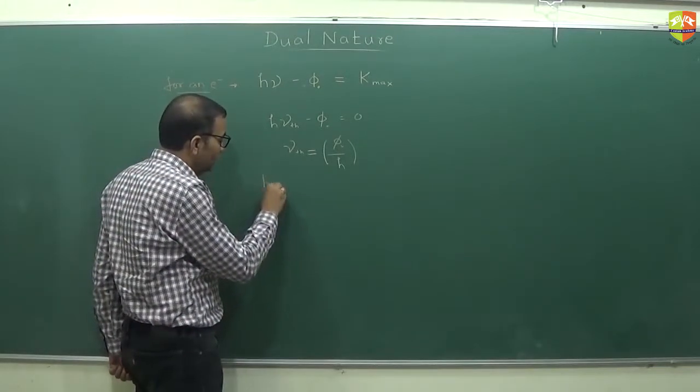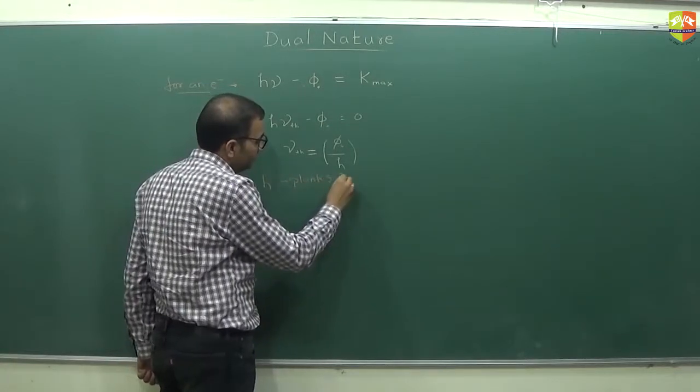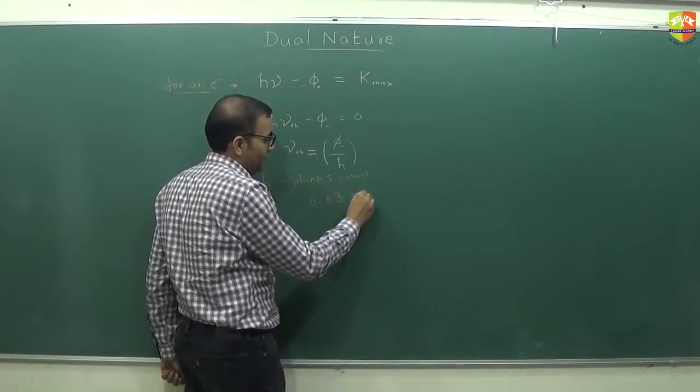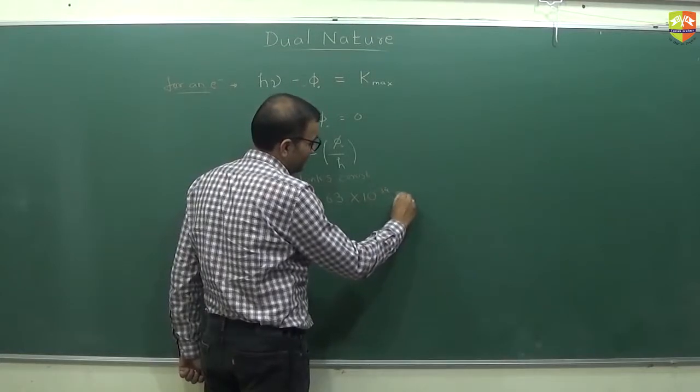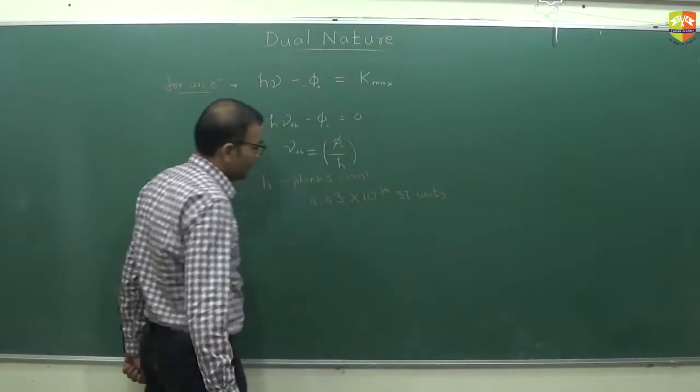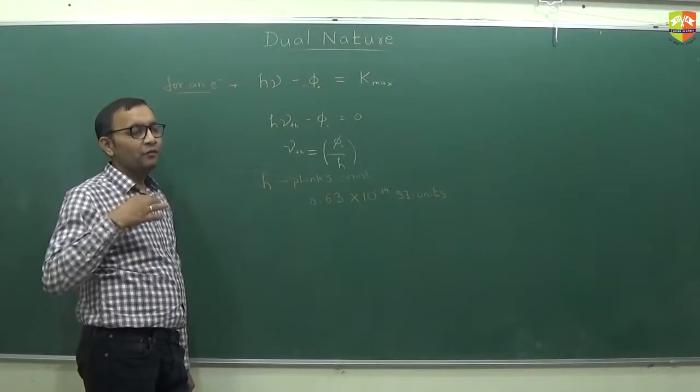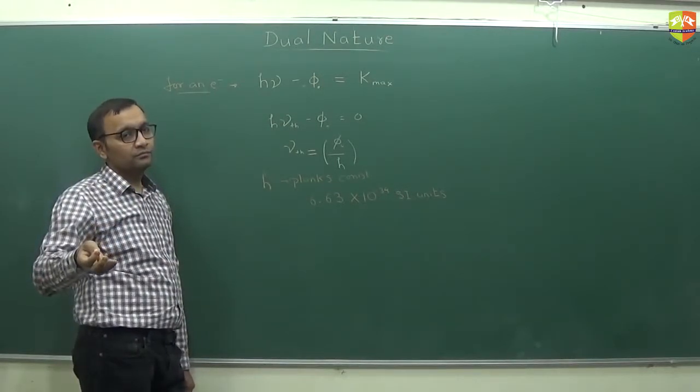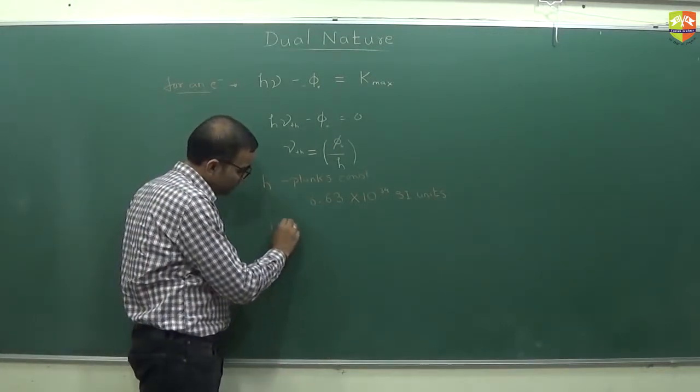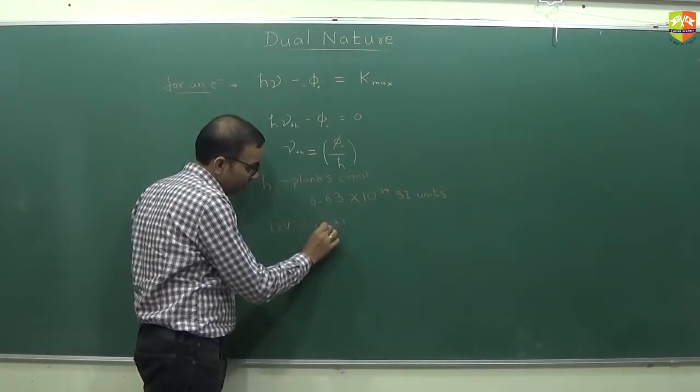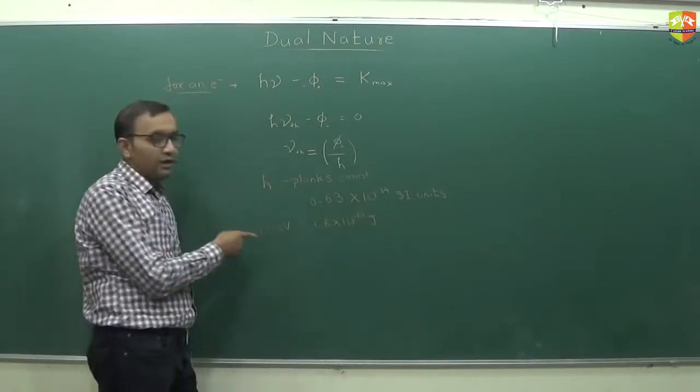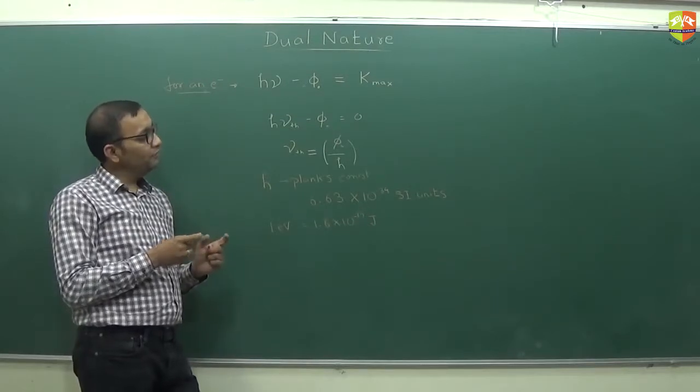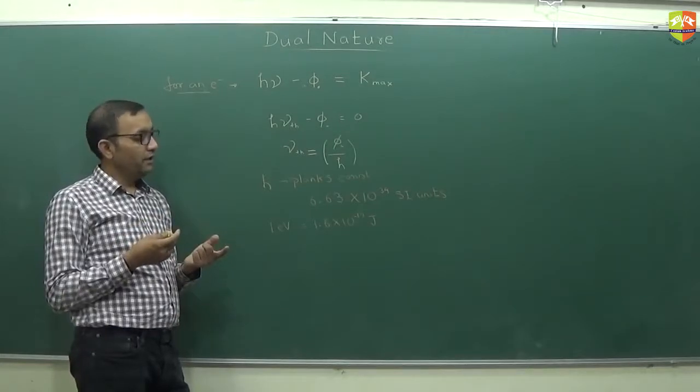Do you know what is the value of h? What is this h called? Planck's constant. One electron volt is 1.6 into 10 to the power minus 19 joules. How much is 2 electron volt? 2 into this. 5 electron volt? 5 into this. Because you are dealing with very very less amount of energy, it makes sense to write energy in the form of electron volt.